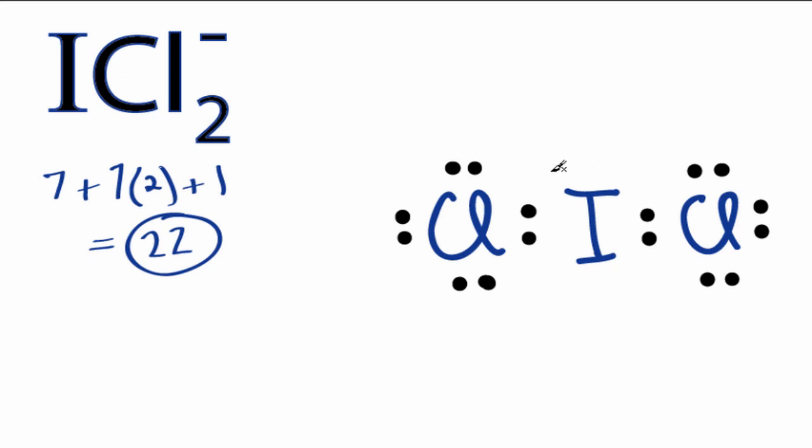That's okay, because iodine is in group 4, and it can hold more than 8 valence electrons. We'll put 2 pairs up here, and 1 down here. So, we've used all 22 valence electrons. The chlorines, they have octets, and the iodine, it's okay. It has more than 8, but being in period 4, that's fine.